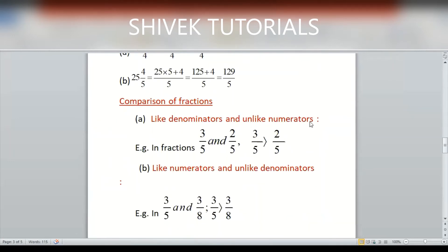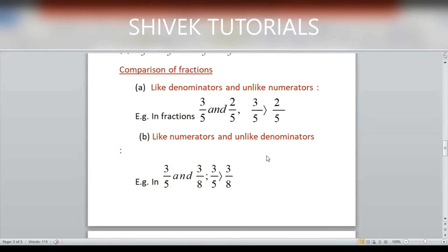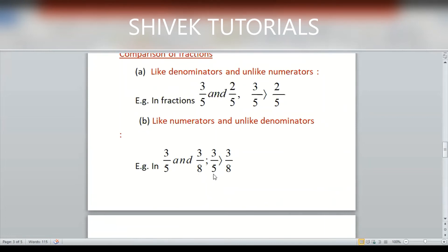Comparison of fractions. Case 1 — like denominators, unlike numerators: when the denominator is the same, compare numerators. Whichever numerator is bigger, that fraction is bigger. For example, 3/5 vs 2/5 — denominator is the same, numerator 3 > 2, so 3/5 is bigger. Case 2 — like numerator, unlike denominators: when the numerator is the same, the fraction with the smaller denominator is the bigger fraction. You can verify by dividing.